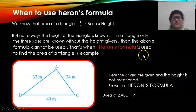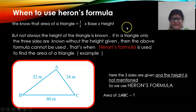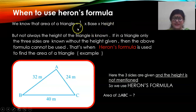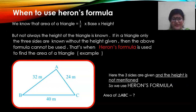When to use Heron's formula? You are aware that area of a triangle is half into base into height. So if the base and the height are known to you, you can find out the area of the triangle. Similarly, area of a right-angled triangle is half into product of the perpendicular sides. If the two perpendicular sides are known, you can find out the area of a triangle.